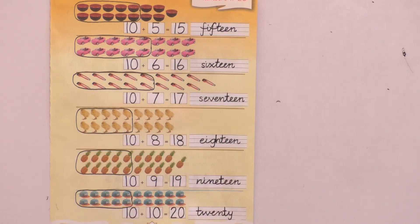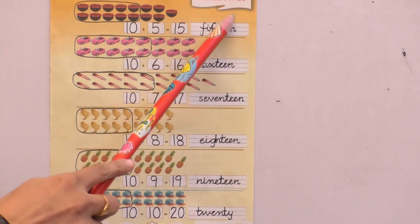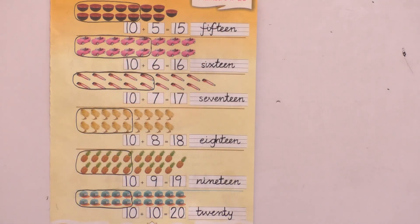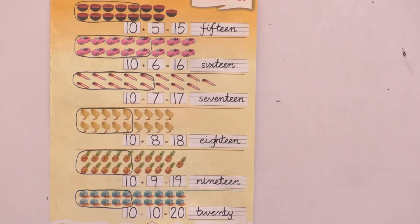We have learned now numbers 11 to 20 and also the number names. I hope your concept is clear now. After completing the work say Alhamdulillah and Allah Hafiz.